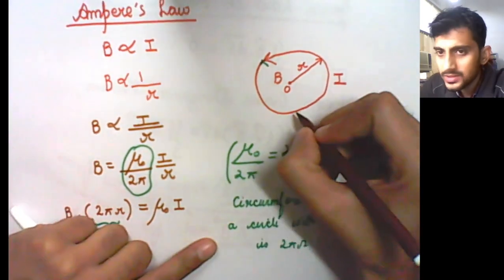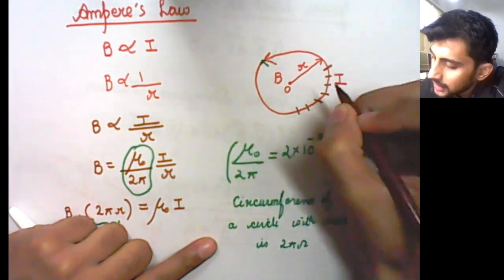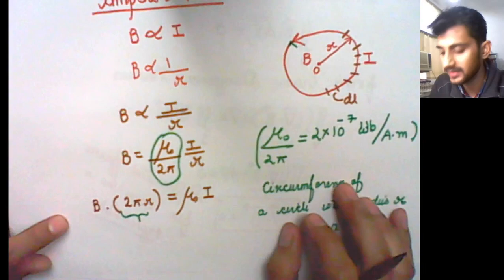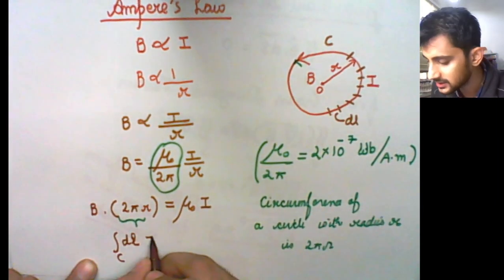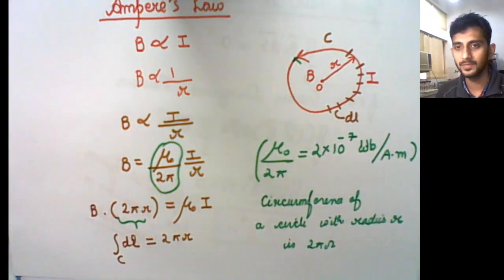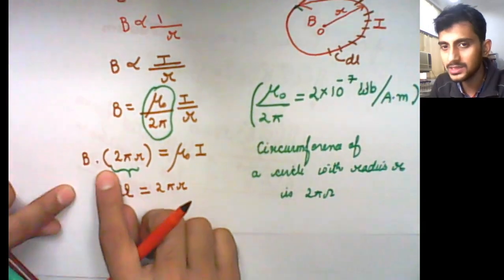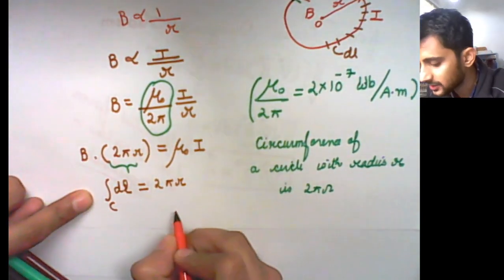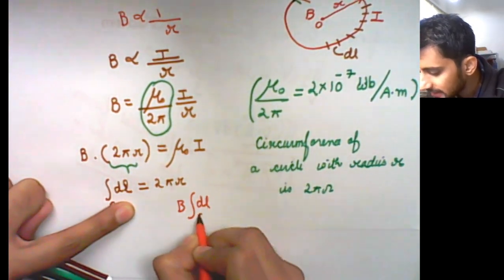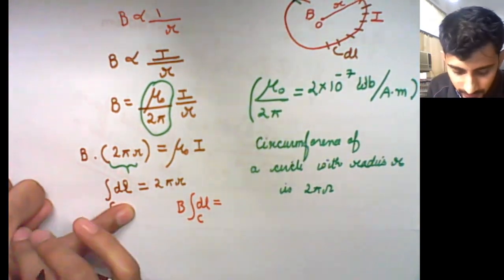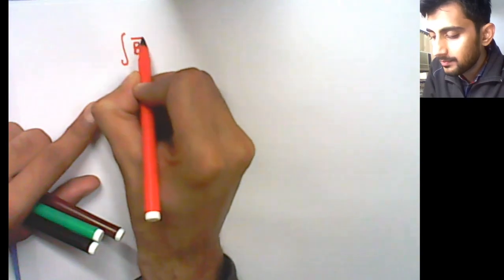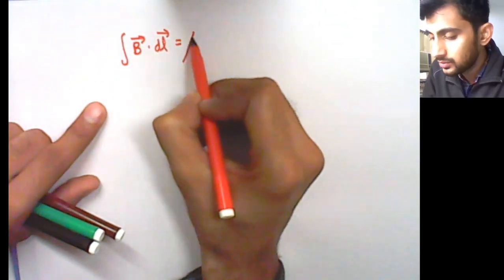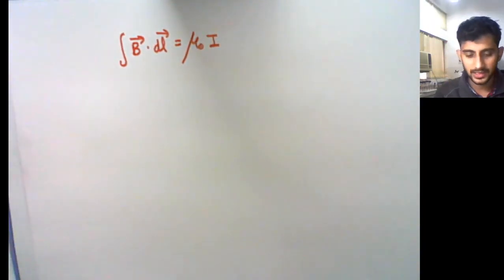We can also write this differently. If we divide this loop or coil into small dL sections, then the integration of dL over the closed curve C gives the total circumference 2πr. Because B is constant, we can write B times the integral of dL over curve C equals mu0 times I. Since B and dL are both vectors, finally we can write that the line integral ∮B·dL equals mu0·I.